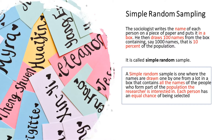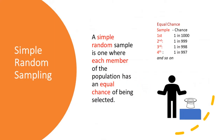Therefore, we can say that a simple random sample is one where the names are drawn one by one from a lot in a box that contains all the names of the people who form part of the population the researcher is interested in. Each person has an equal chance of being selected. In a simple random sampling, each member of the population has an equal chance of being selected.